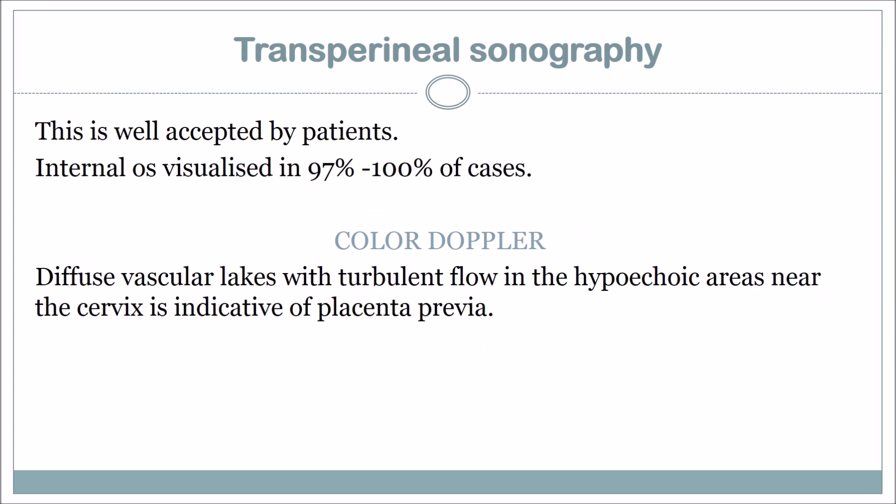Transperineal sonography is well accepted by patients, with the internal os visualized in 97 to 100 percent of cases. On color Doppler, diffuse vascular lakes with turbulent flow in the hypoechoic areas near the cervix are indicative of placenta previa.